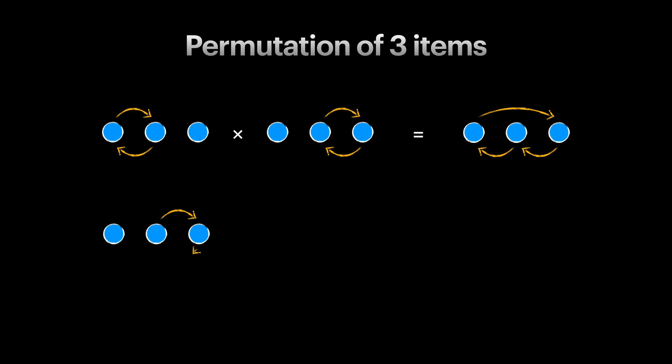If we swap the second pair of circles first, and then swap the first pair, then it's like we are rotating the circles one to the right. As you see, the order of composing the same permutations makes a difference to the end result. In another word, binary operation for composing permutations is not commutative.